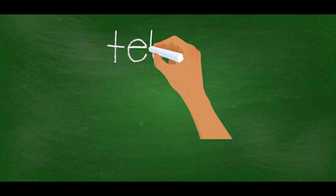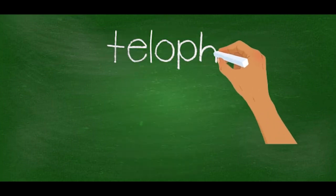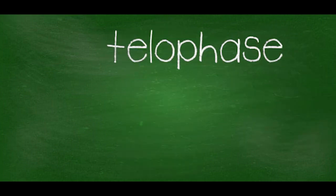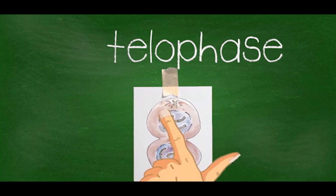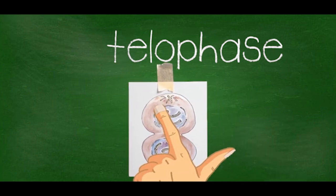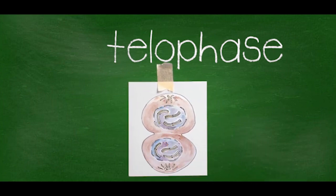Telophase: two daughter nuclear envelopes form around the chromosomes. The nuclei will reappear and chromosomes become less condensed. Remaining spindle microtubules are depolymerized. Now the mitotic phase is completed.